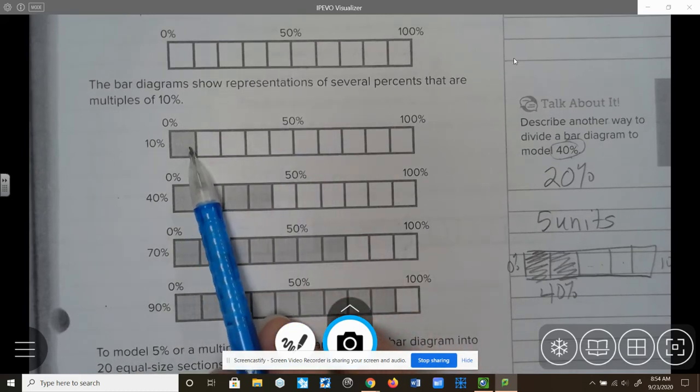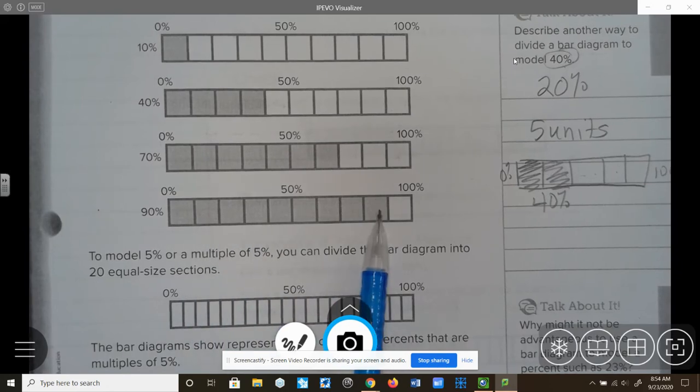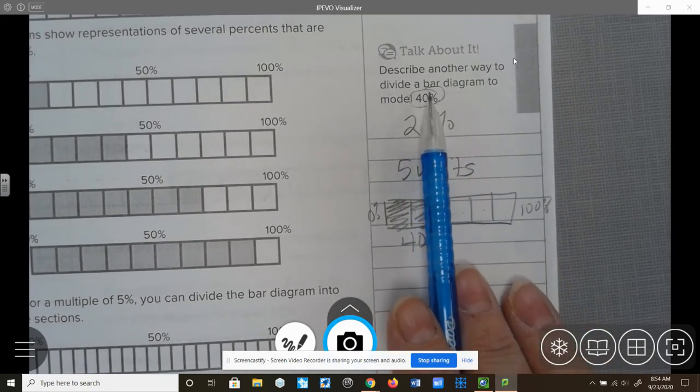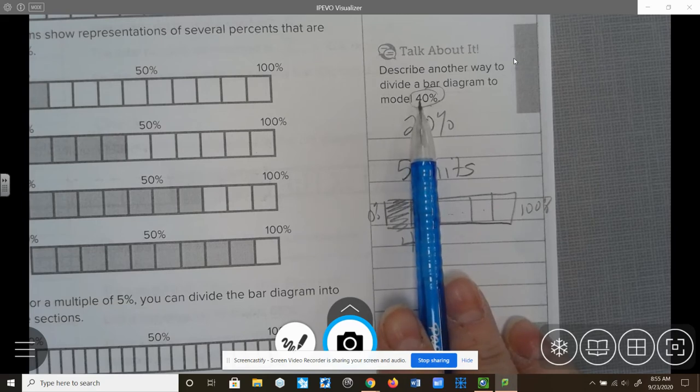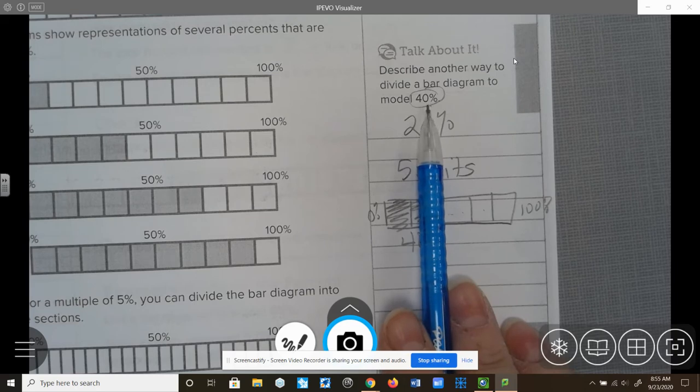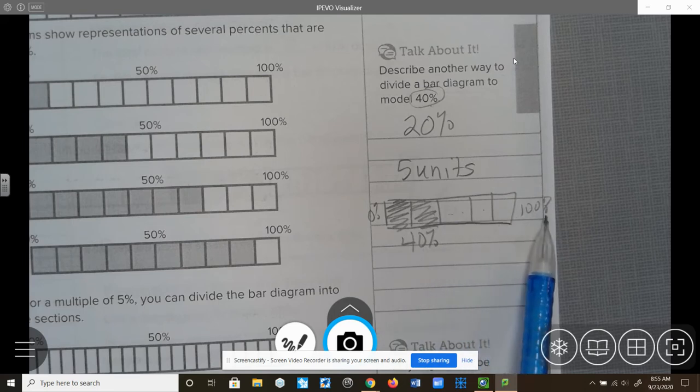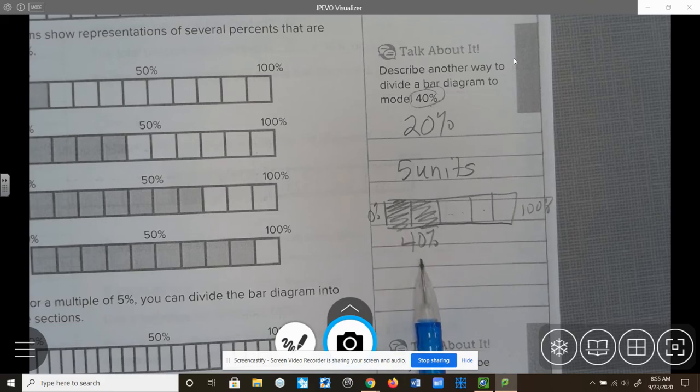So if I go over here to the side, the talk about it right here in the center says, describe another way to divide a bar diagram to model 40%. So what I was thinking is, 40%. I can't get 40% to 100 evenly, but I can get 20% to 100 evenly and 20% to 40% evenly. So I could make my bar diagram into five units. So I did that here. So I drew my bar diagram and I divided it into five units. Each unit is 20%. So 20%, 20%, 20%, 20%, 20%, which would equal 100%. And if we take and we want to model 40%, we can say 20% and 20% would equal the 40%.